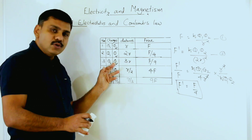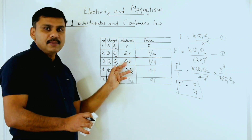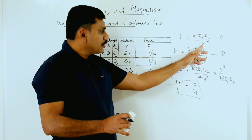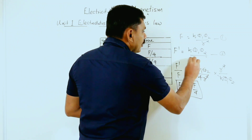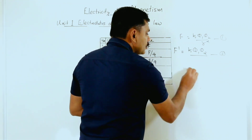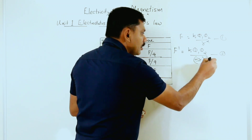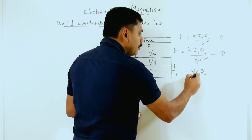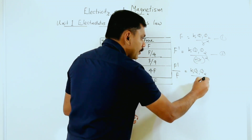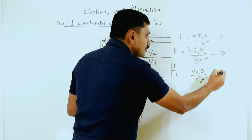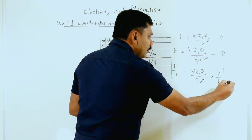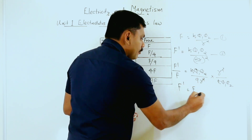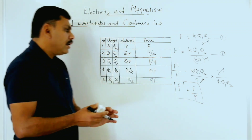In the third case, the charges remain the same — q1 and q2 — and the distance is tripled, that means 3r. So F = k·q1·q2 divided by r², and now instead of 2r squared we write (3r) squared. Taking F' divided by F: k·q1·q2 divided by 9r², multiplied by the reciprocal r² divided by k·q1·q2. This cancels, giving F' = F/9. The new force is one-ninth of the previous value.